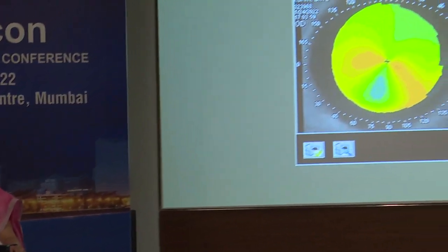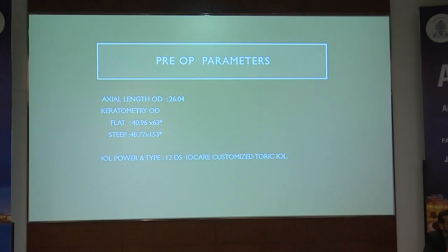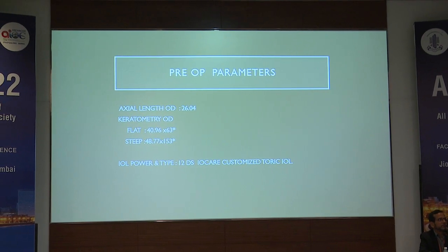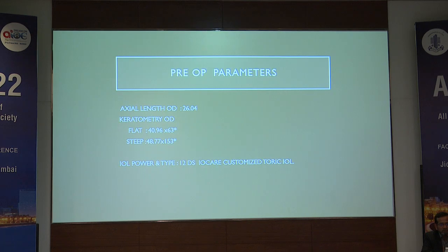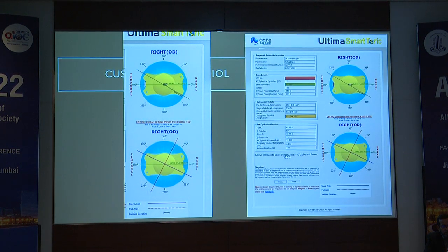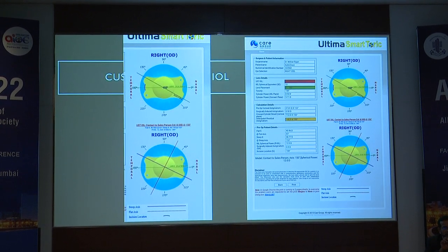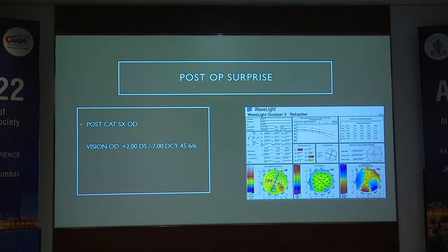This patient has a PMD with a cylinder of 4.5 spectacle, but 6.7 on the Pentacam and 7.7 on topography. The axial length was calculated, and the flat and steep K were also calculated. We did a customized lens for this patient — ordered from an Indian company to cover the 7-diopter range of astigmatism.